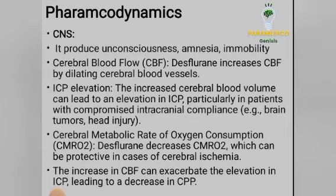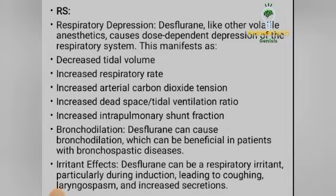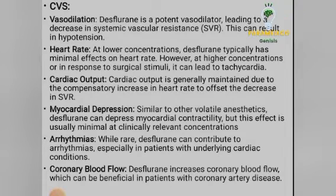In summary for CNS: cerebral blood flow increases, ICP increases, cerebral metabolic rate decreases, and cerebral perfusion pressure (CPP) decreases. Regarding the respiratory system, desflurane, like other volatile anesthetics, causes dose-dependent depression: decreased tidal volume, increased respiratory rate, increased arterial CO2 tension, increased dead space-to-tidal volume ratio, and increased intrapulmonary shunt fraction. It acts as a bronchodilator, beneficial in bronchospastic diseases, but it is also a respiratory irritant — during induction it can cause coughing, laryngospasm, and increased secretions.